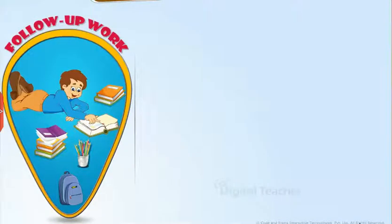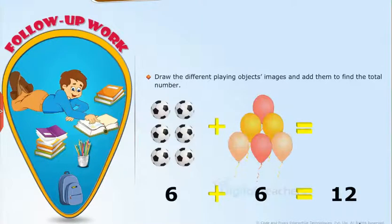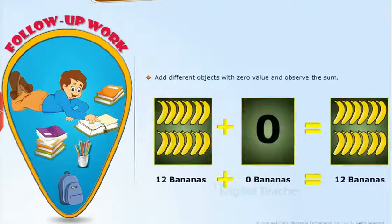Follow-up work: Take up the following activities. Draw the different playing objects, images and add them to find the total number. Add different objects with zero value and observe the sum.